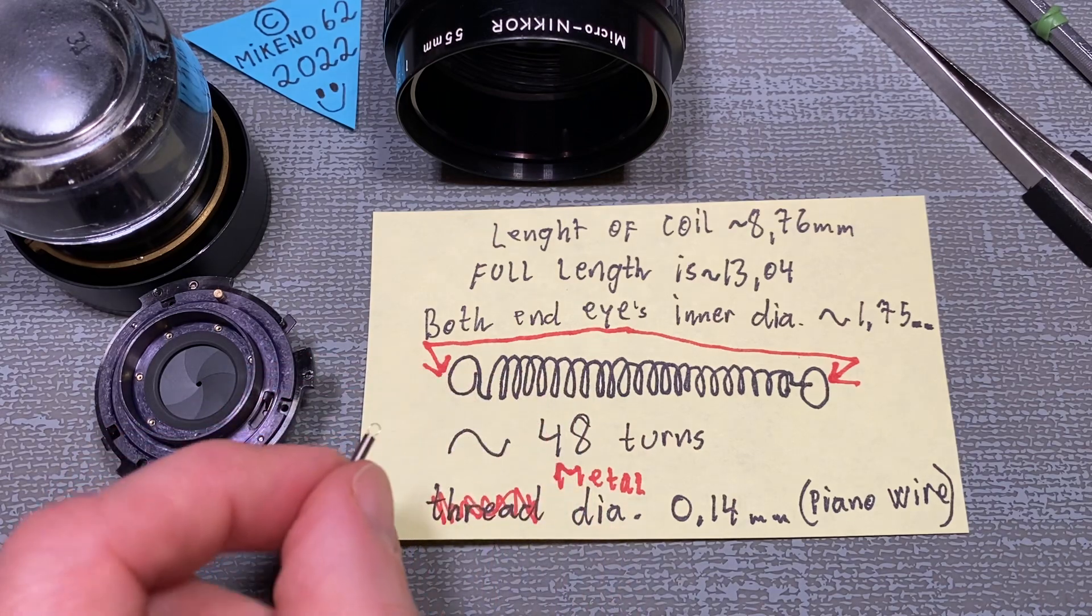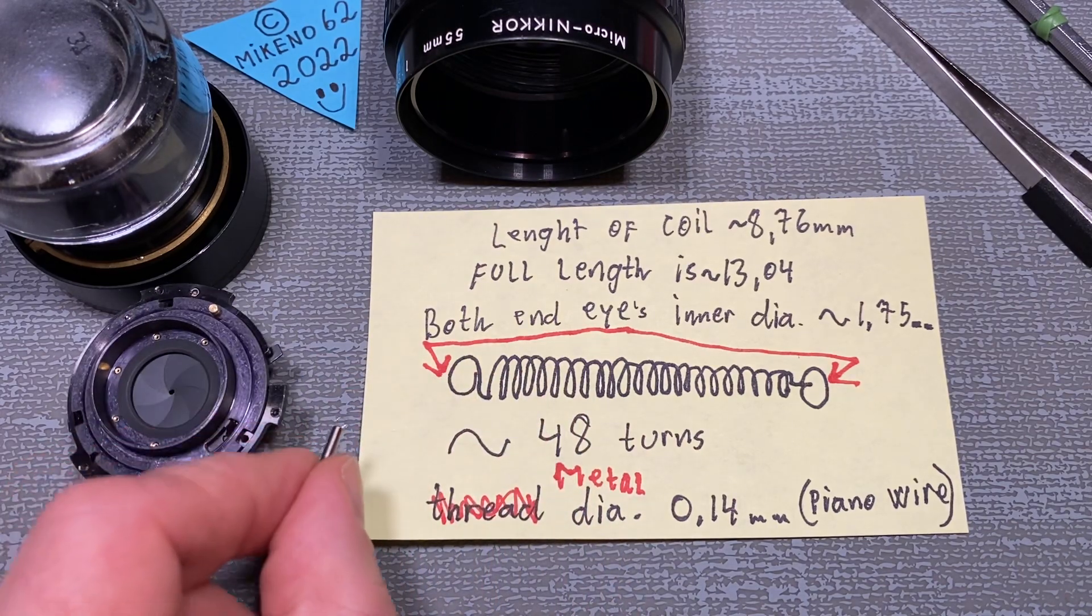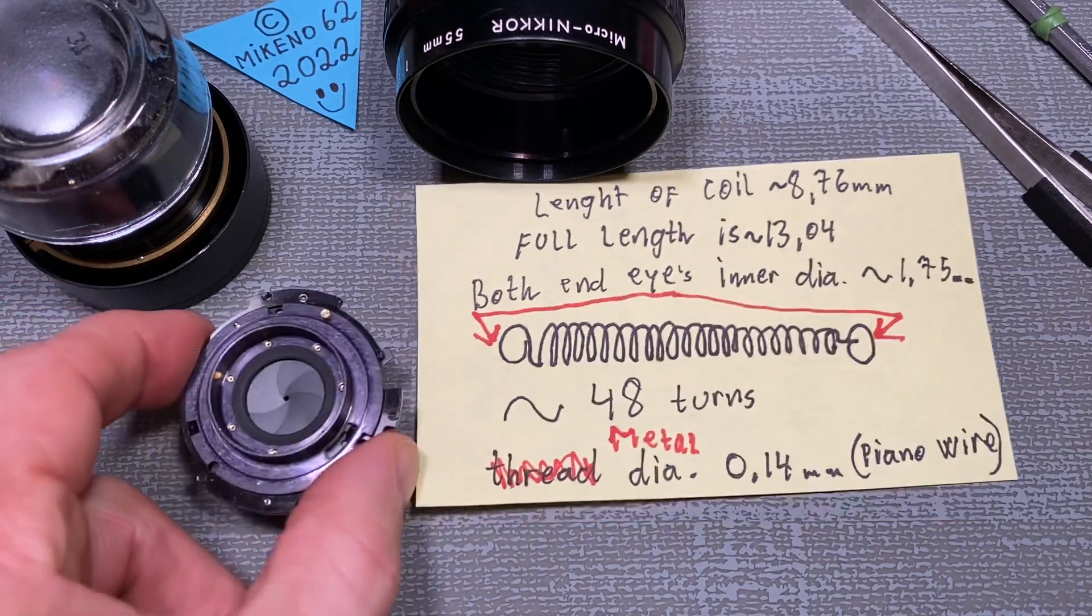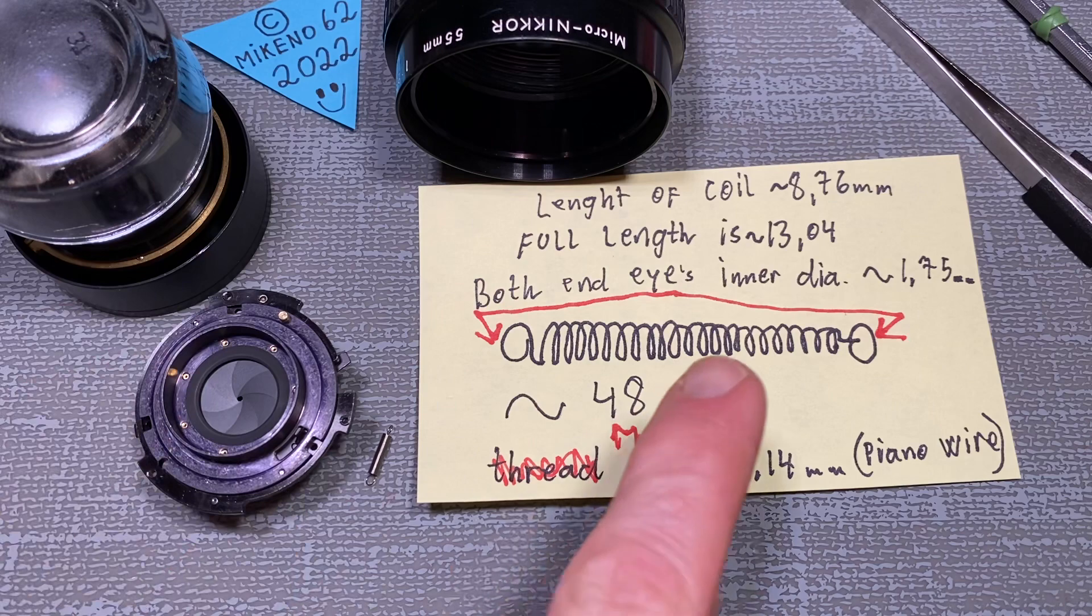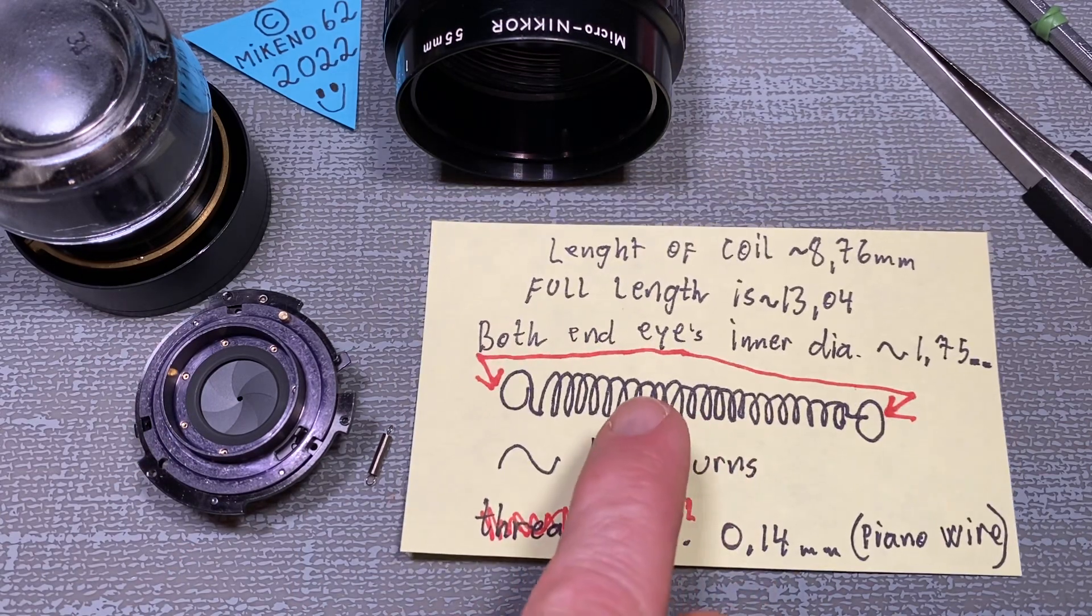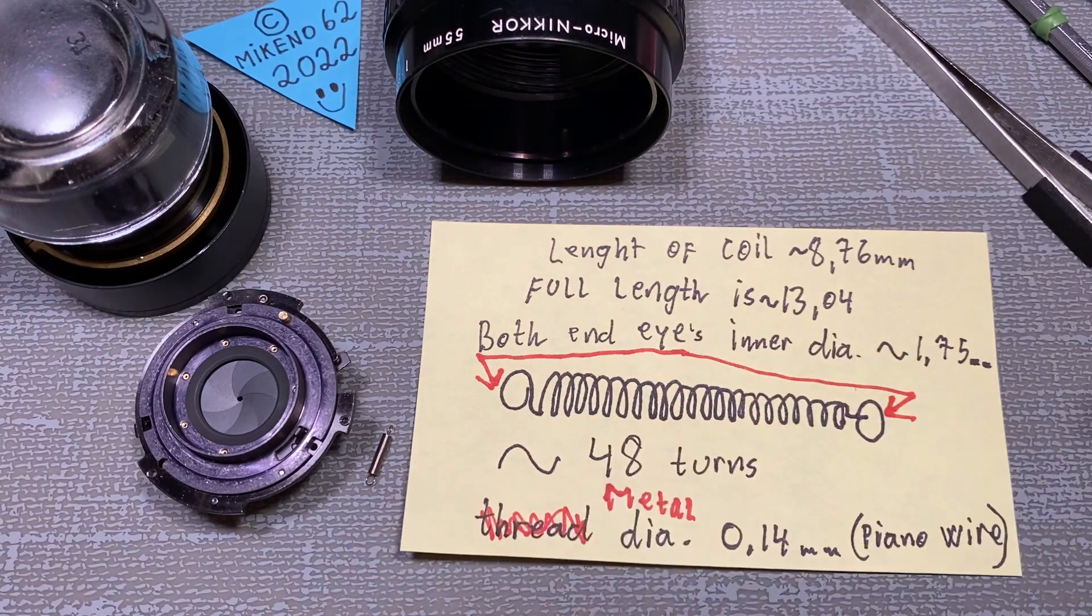What I think is you could actually buy a used analog camera where there are a lot of springs in, and you will possibly get a spring that could be almost that dimension.